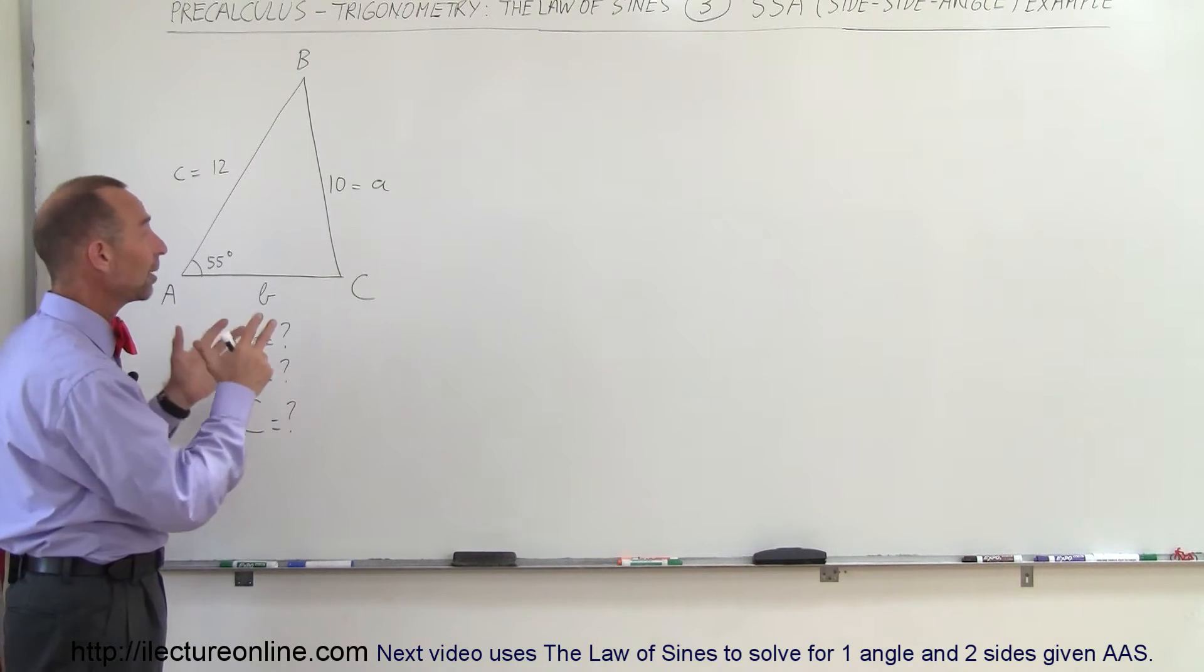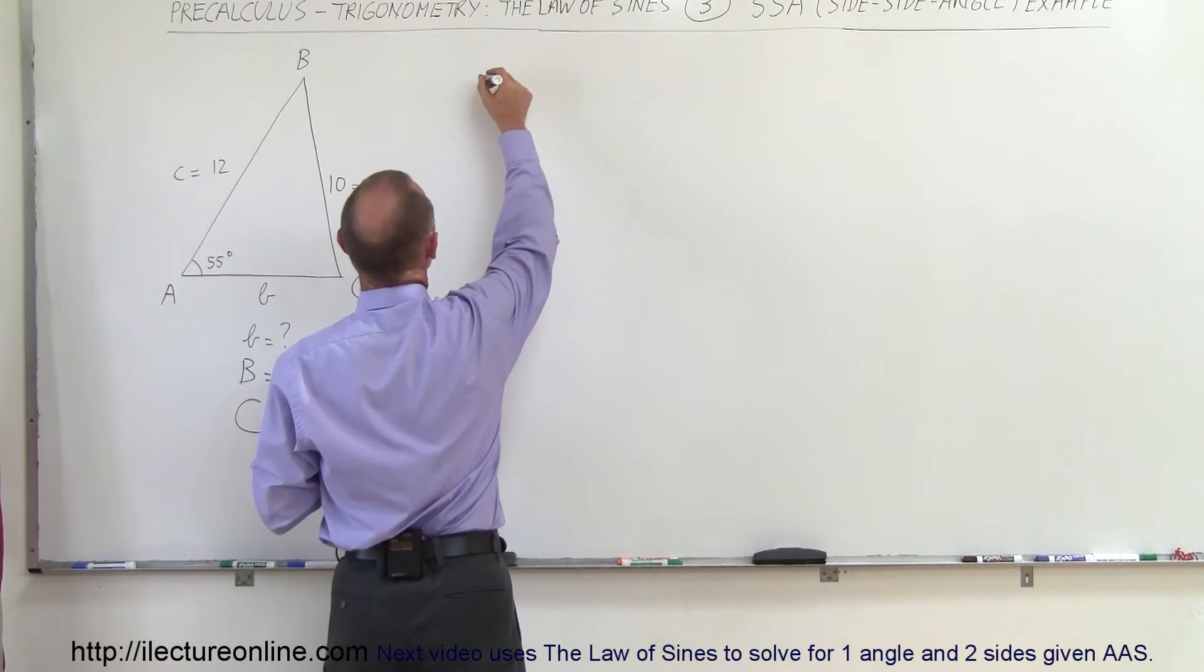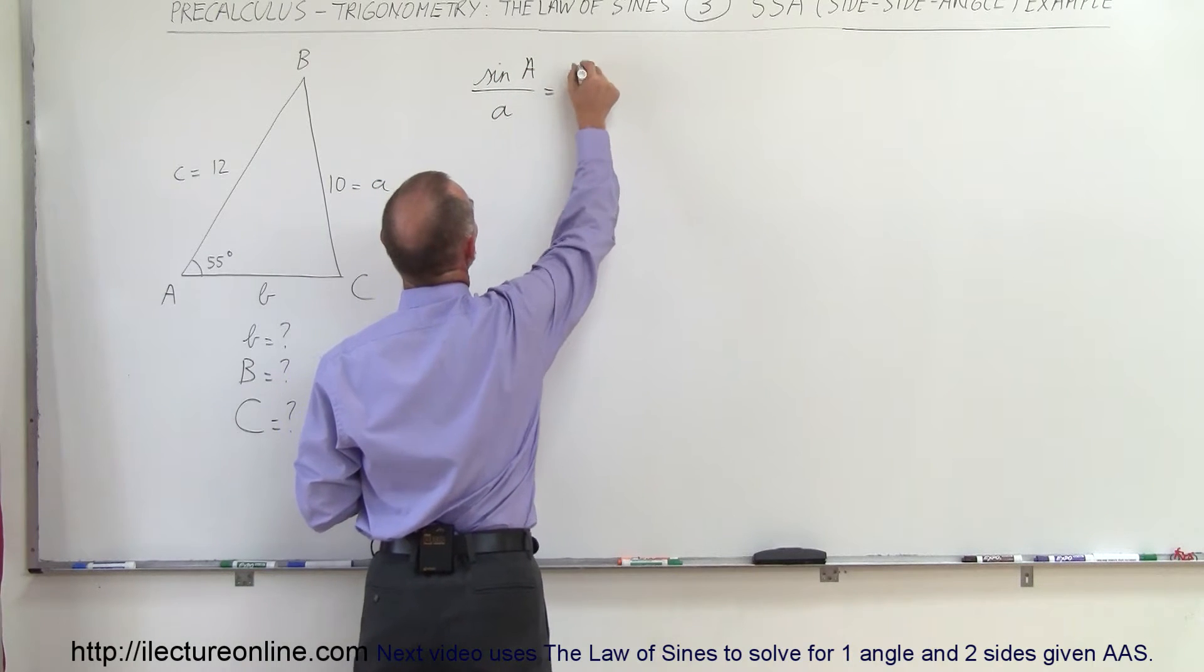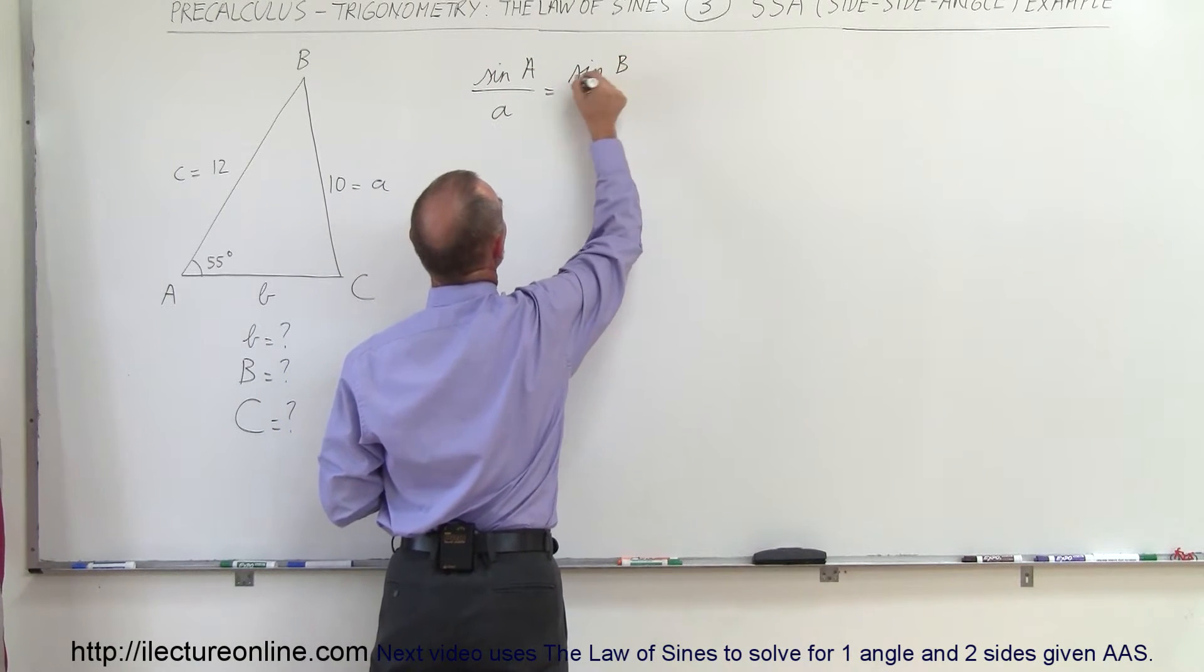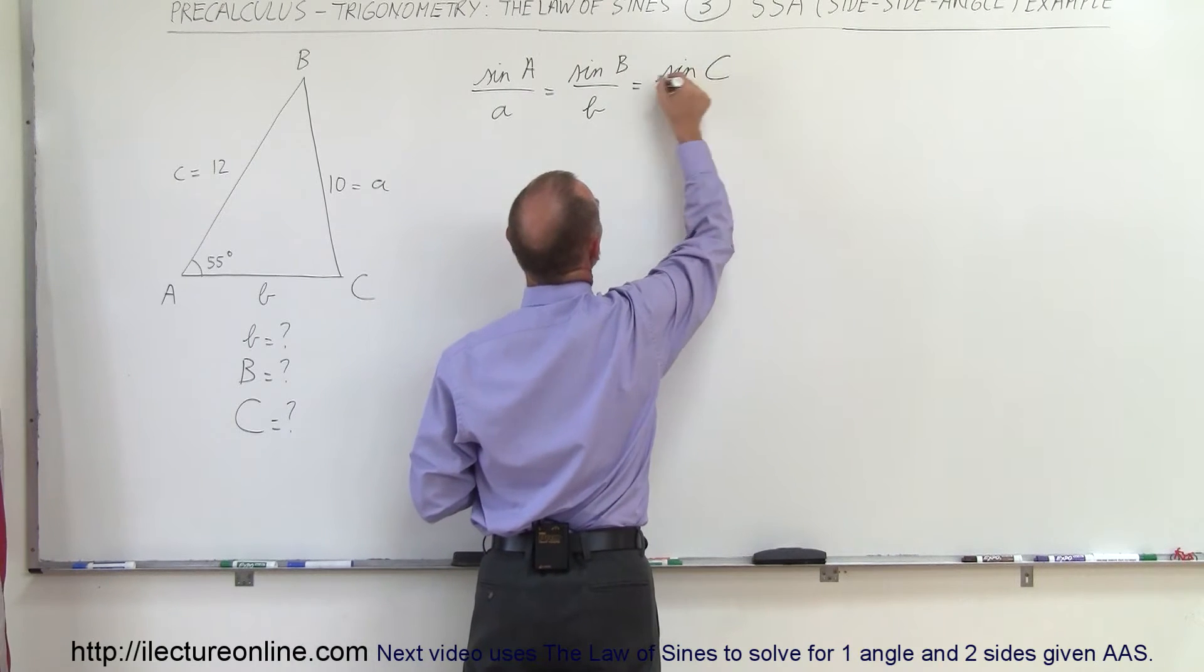Well first of all we're going to set up the equation. So we have the sine of angle A divided by side A equals the sine of angle B divided by side B equals the sine of angle C divided by side C.